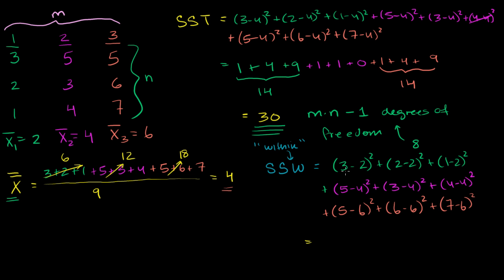So this is going to equal: for the first group it's 1 plus 0 plus 1, which equals 2. For the second group it's 1 plus 1 plus 0, so another 2. And for the third group it's 1 plus 0 plus 1, which is also 2. So our sum of squares within is 6. One way to think about it: our total variation was 30, and based on this calculation, 6 of that 30 comes from variation within these samples.